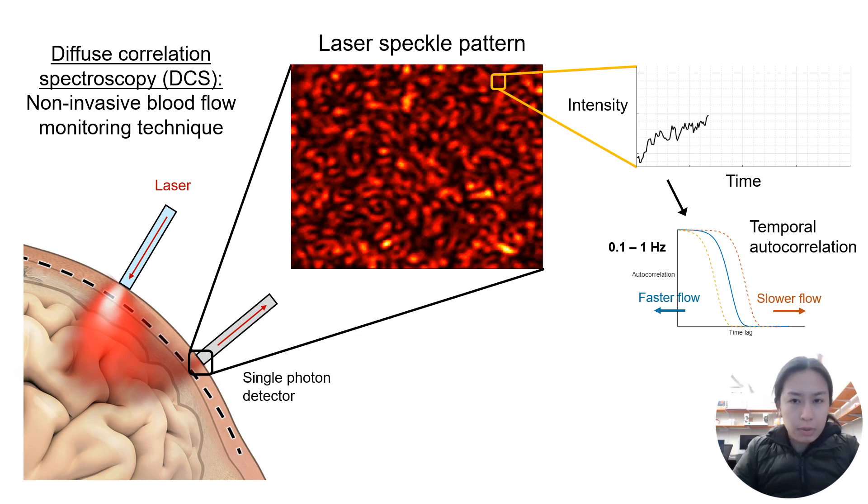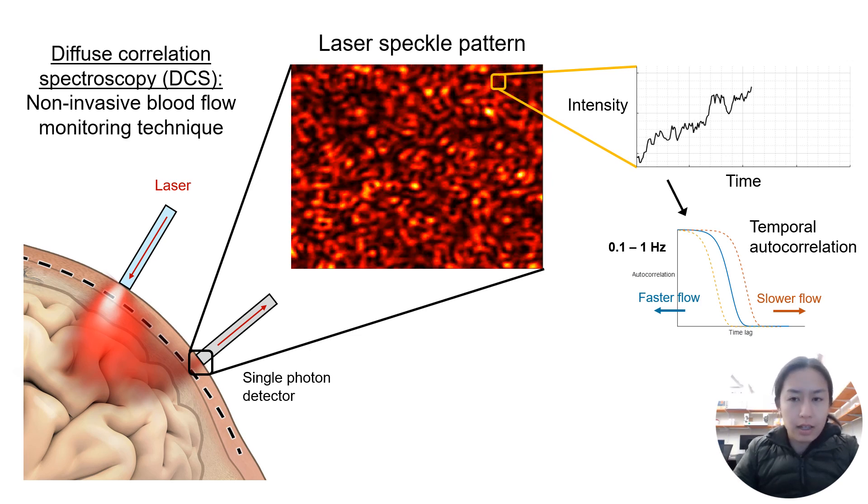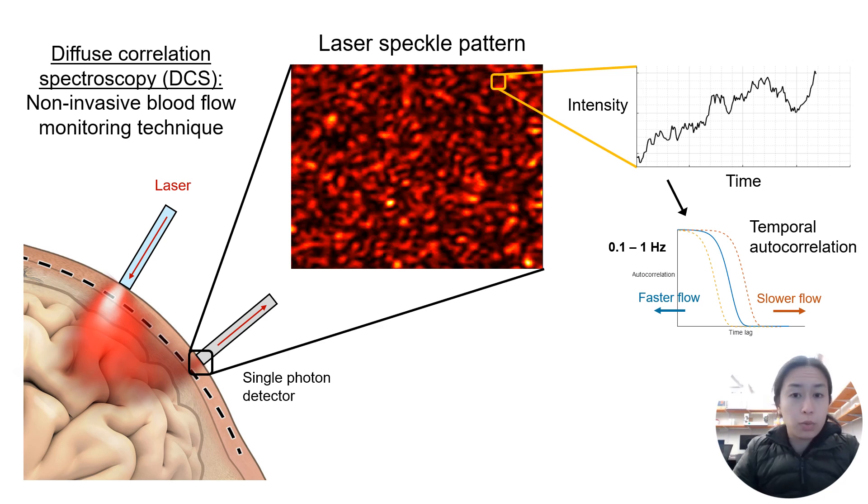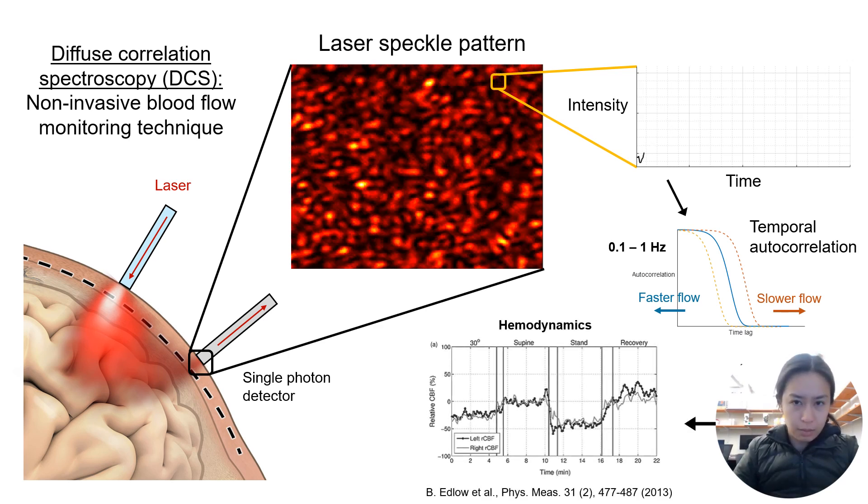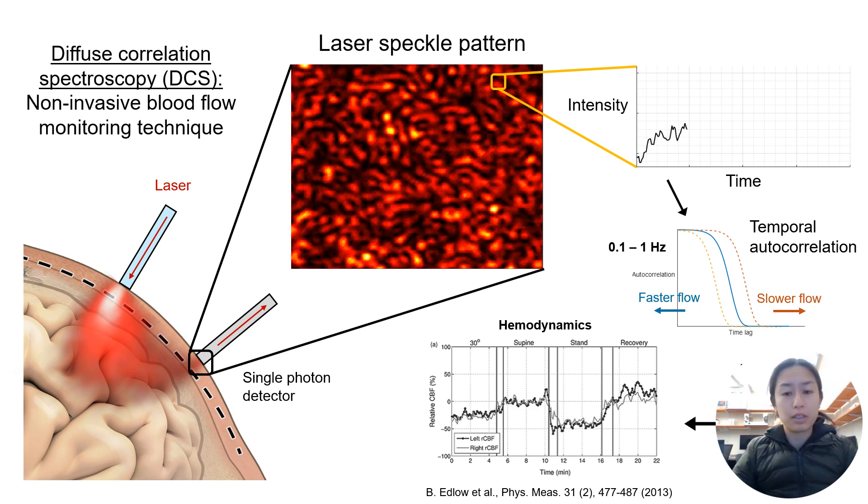This correlation has an exponential decay and the rate of this decay can be used to recover tissue blood flow. In other words, slower and faster decays imply slower or faster hemodynamics, respectively.